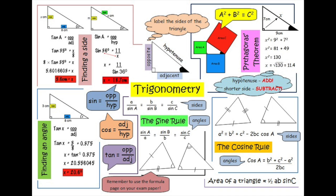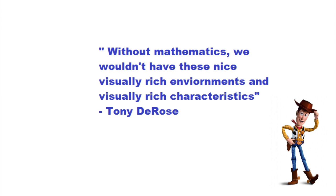Trigonometry is a branch of mathematics that studies relations of the sides and angles of triangles, including relevant functions of any angles. Trigonometry is often used in animated movies to help rotate, move characters, and create characters. Like Pixar animator Tony DeRose once said, without mathematics we wouldn't have these visually rich environments and visually rich characteristics.